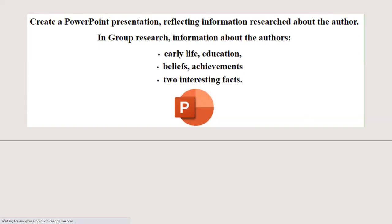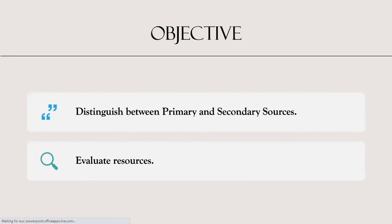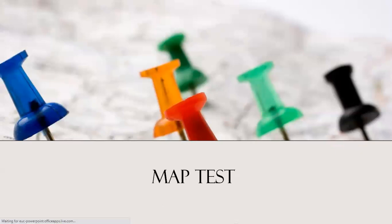We're going to create a PowerPoint presentation in groups reflecting research about the author's early life, education, beliefs, achievements, and two interesting facts. The fourth lesson will be a library lesson where you will be introduced to primary and secondary sources. Miss Manal and I are going to explain how to evaluate resources — this is also relevant to other disciplines such as Individuals and Societies, where in this unit we will evaluate sources using OPVL.